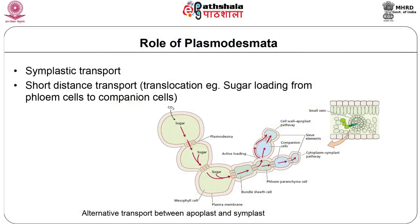The role of plasmodesmata: there are two main roles — symplastic transport, which occurs from cell to cell (figure A), and short-distance transport, that is translocation, for example sugar loading from phloem cells to companion cells (figure B). Plasmodesmata mostly take part in passive transport. There are three main types: symplastic transport, short-distance transport, and viral transport, and these are all passive transport.